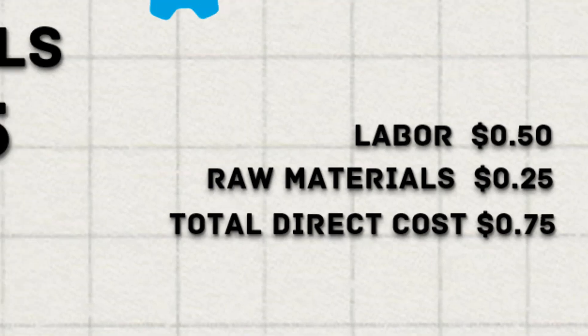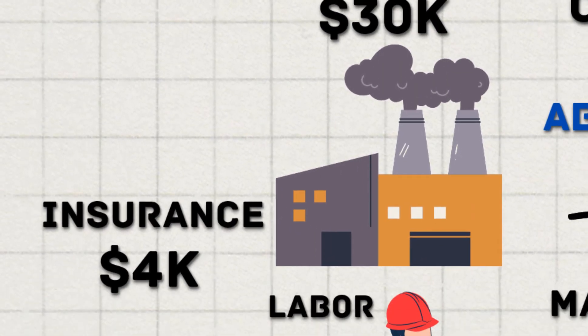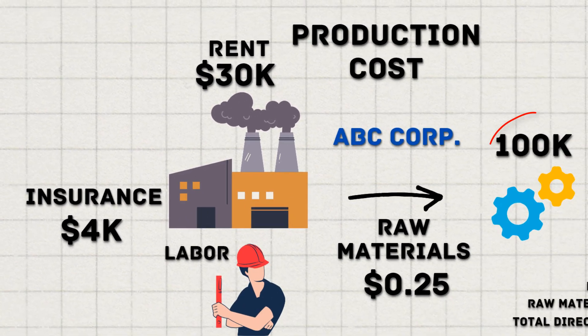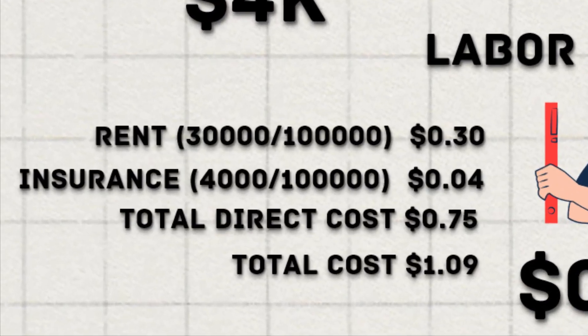The indirect costs of rent and insurance can be allocated to the widget on a per unit basis as follows: rent 30 cents, insurance 4 cents. Total widget cost is $1.09.